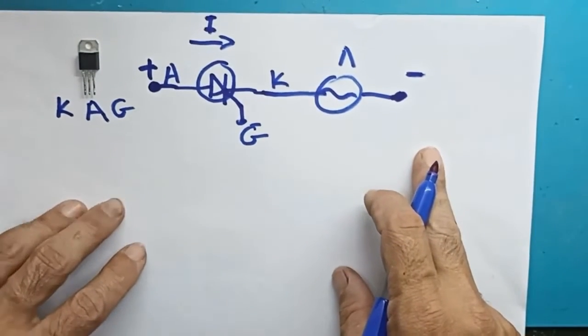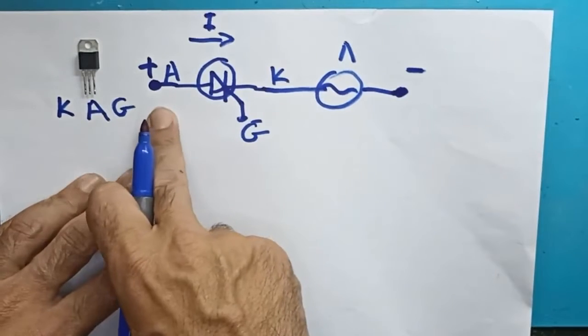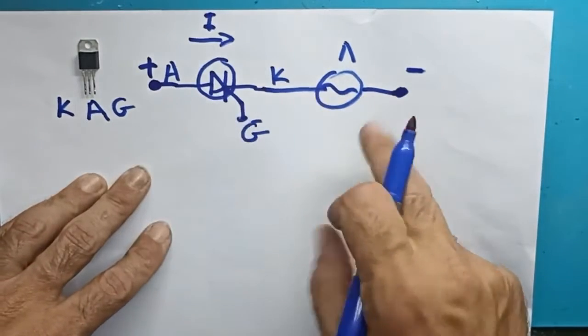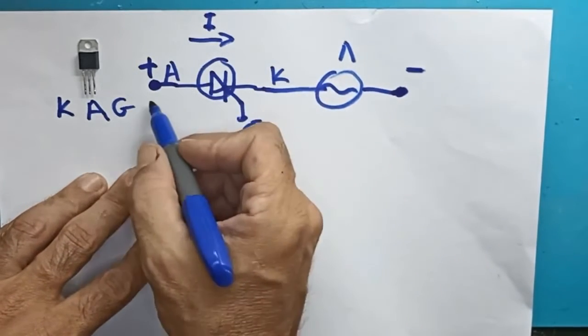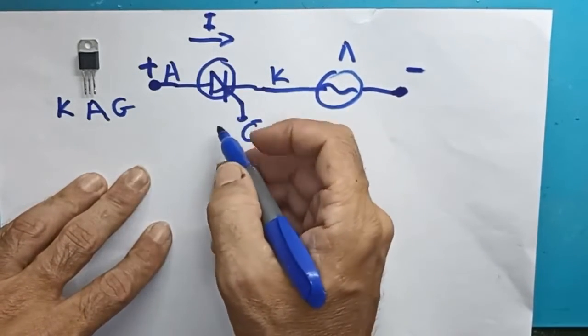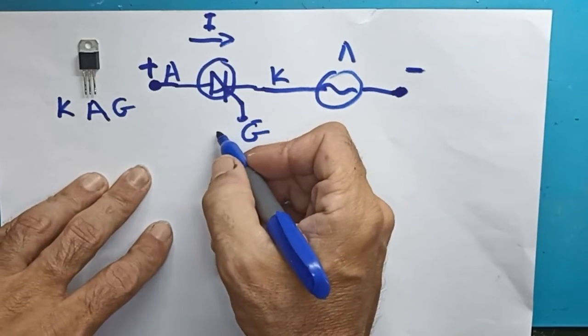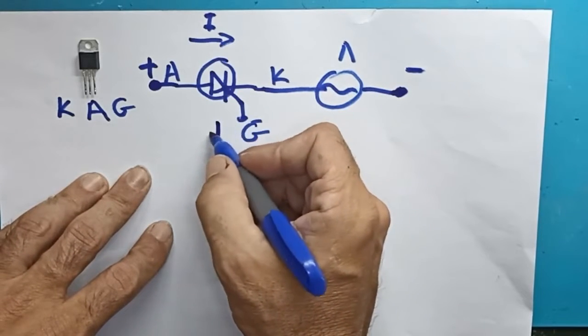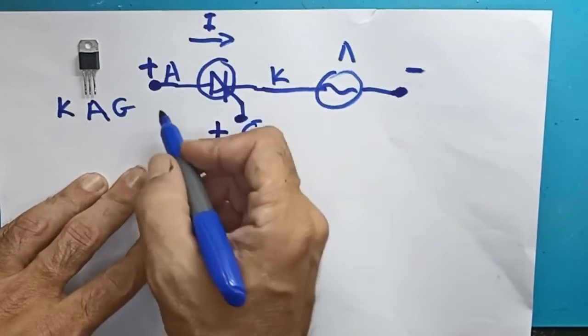I forgot to mention that in order to become stable and remain stable, the thyristor needs to draw a little current, usually around 70 milliamps. So if we replace the bulb with an LED, this circuit will not be able to operate. It's better for the bulb to be incandescent.